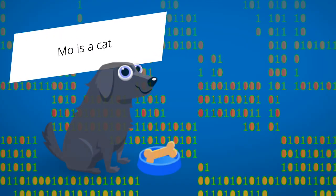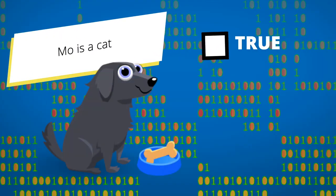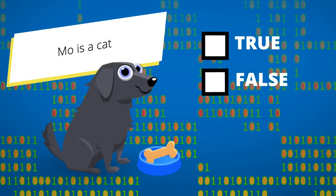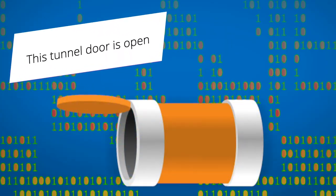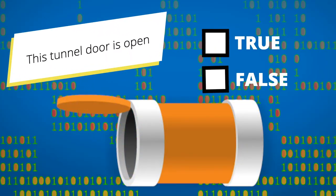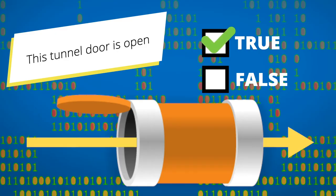Moe is a cat. True or false? That's false. You can tell by her ears, tail, and bark that Moe is a dog. The tunnel door is open. True or false? That's true. The tunnel door is up, which means you can pass through.